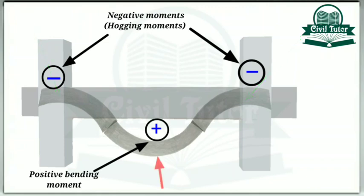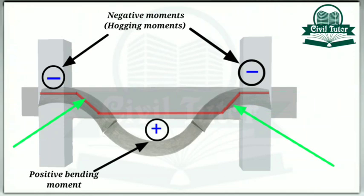So to counter this positive moment we provide reinforcement bars at the bottom of the beam to resist the tensile stresses and to counter these negative moments we provide the reinforcement bars at the top here. Now we don't want to place these bars separately and we want to get rid of these separate bars. So we place crank bars here which are actually bent up bars and which resist the hogging at supports.